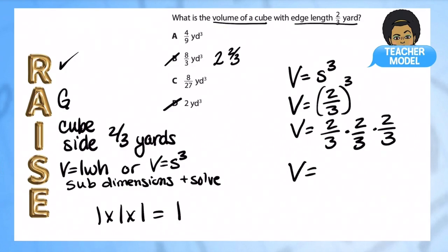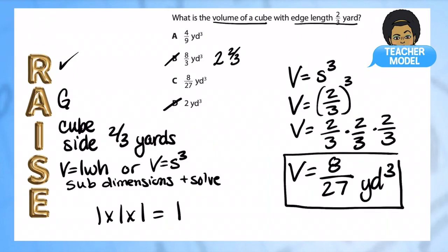Two times two times two - very easy way to make a mistake, it is not six. A lot of kids see that and just add it. Two times two is four, four times two is eight. And three times three is nine, nine times three is twenty-seven. So we get 8 over 27 yards to the third power. It was supposed to be less than one, and that means our answer is C.